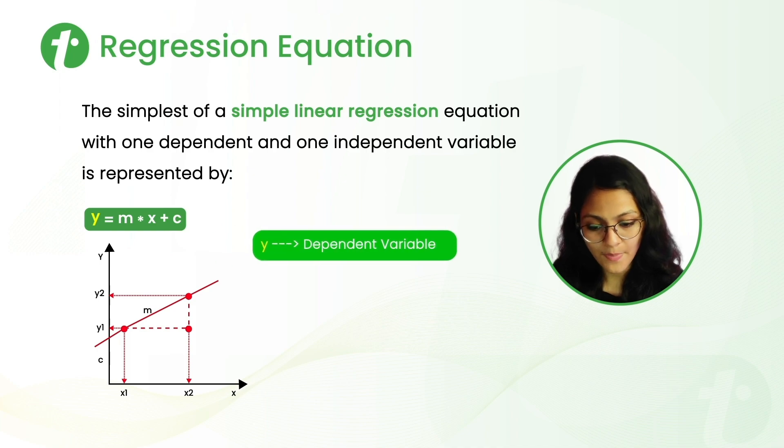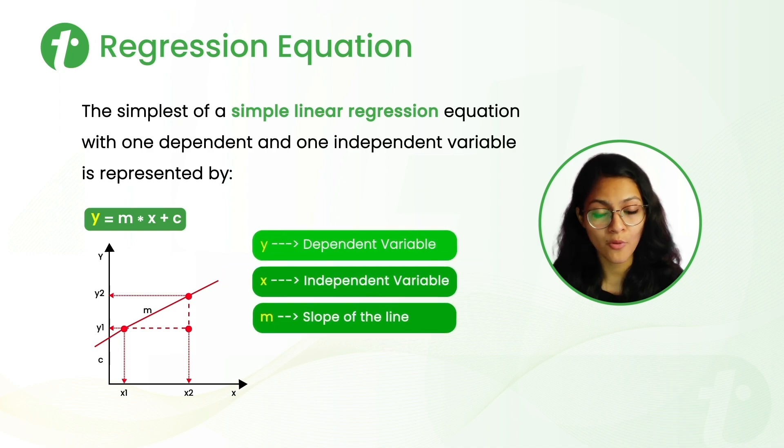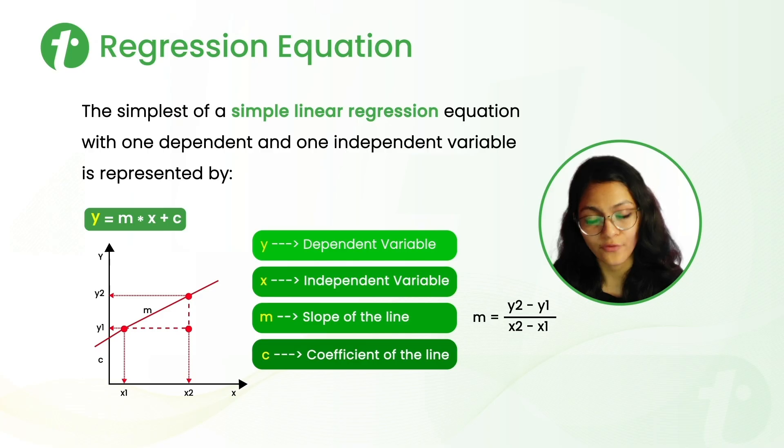So here, Y is the dependent variable, X is the independent variable, M is the slope of line, which we calculate as Y2 minus Y1 over X2 minus X1, and C is the coefficient of the line.